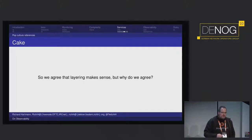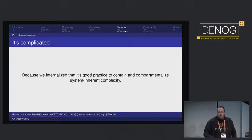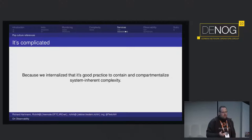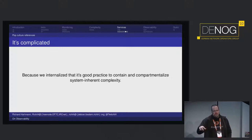Why do we agree that this layering makes sense? Everyone here will agree that ISO layers make sense, because at a very basic level we already know this. We've internalized as children that it makes sense to have compartments of complexity — you give money, you get a loaf of bread. This is built into our whole society on many levels. If we design our systems this way, it makes it easier to observe and handle them.